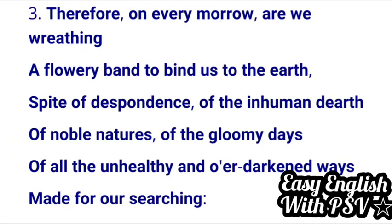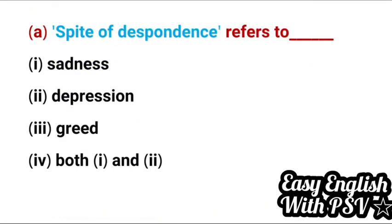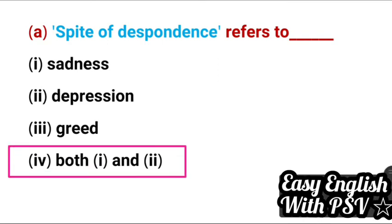Third extract: 'Therefore on every morrow are we wreathing a flowery band to bind us to the earth, despite of despondence, of the inhuman dearth of noble natures, of the gloomy days, of all the unhealthy and over-darkened ways made for our searching.' Question 1: 'Despite of despondence' refers to — what is the meaning of despondence? It means sadness, depression. Correct answer: both sadness and depression.